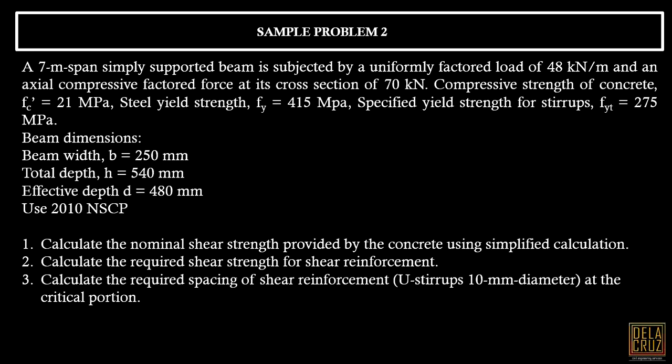Sample problem 2: A 7 meter span simply supported beam is subjected to a uniformly factored load of 48 kN per meter and an axial compressive factored force at its cross section of 70 kN. The compressive strength of concrete, f'c equals 21 MPa, steel yield strength Fy equals 415 MPa, and specified yield strength for stirrups Fyt equals 275 MPa.